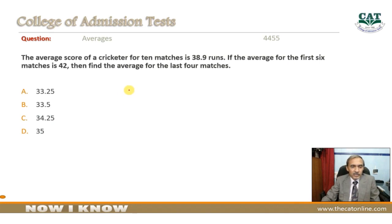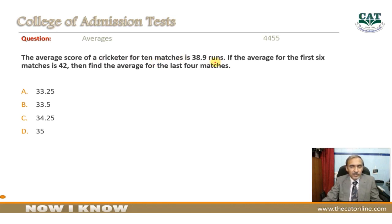The average score of a cricketer for 10 matches is 38.9 runs. If the average for the first six matches is 42, then find the average for the last four matches. Average score of 10 matches is 38.9; the average for the first six is 42, and the average for the last four is not given.